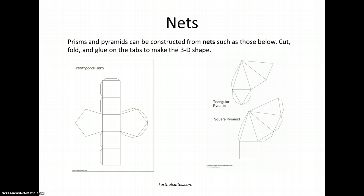Prisms and pyramids can be constructed from nets. Here are two examples of nets. If we cut these out of cardstock, fold them up and tape them or glue them along the little tabs, it would make on the left a pentagonal prism, and on the right a triangular or square pyramid.